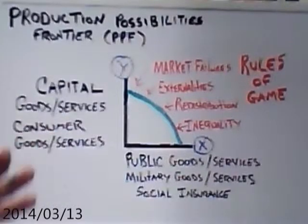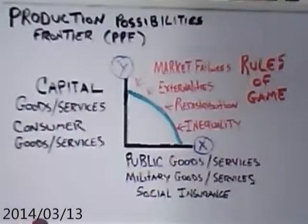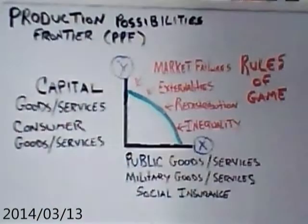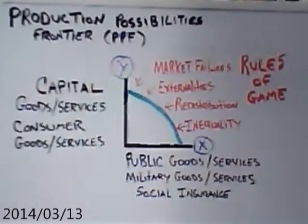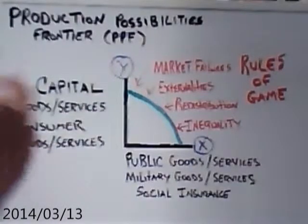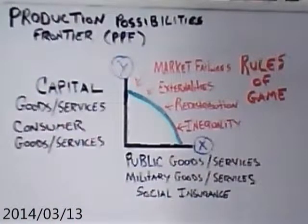There are production externalities and consumption externalities. A textbook example of a consumption externality is secondhand smoke — you're consuming a tobacco product and the secondhand smoke harms other people. You can even consider fireworks an externality: you're enjoying fireworks, but if your neighbor's trying to sleep, there's a cost to him — he's losing sleep. There are also positive externalities: if somebody produces something and many people benefit from it without paying the producer, that's also an externality.